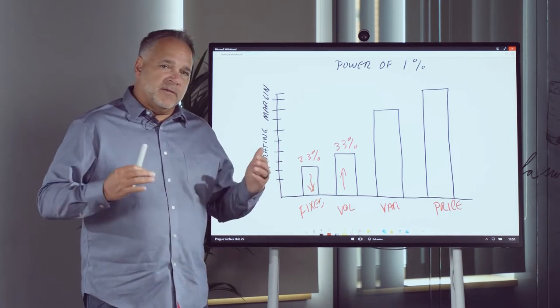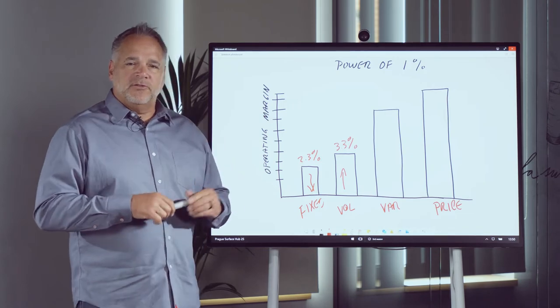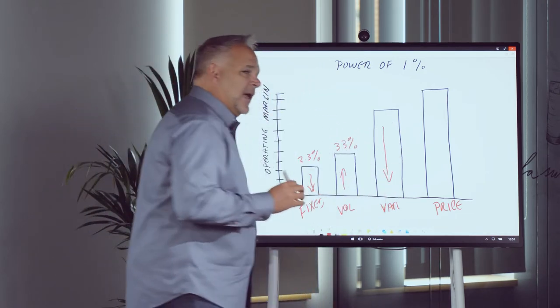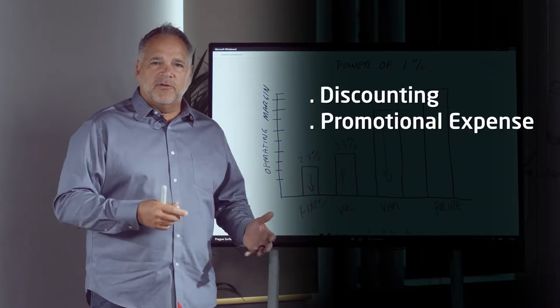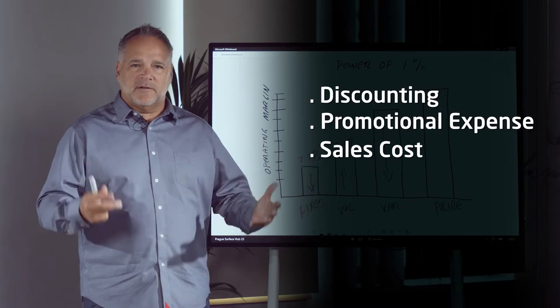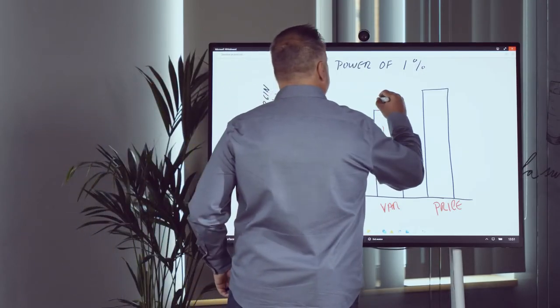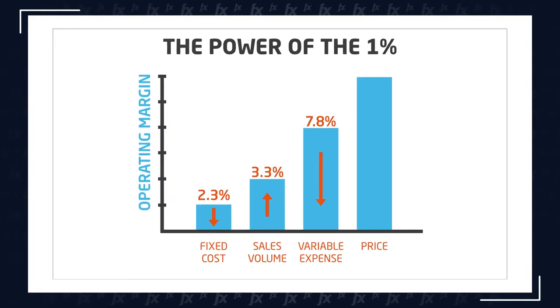Variable expense is one that has the next biggest impact of improvement across your organization in terms of reduction of variable expense. So if you're able to drive down variable expense, these are things like discounting, promotional expense, sales cost, etc. If you can drive down variable expense, that actually has a pretty significant impact on operating margin improvement of 7.8%. This is significant.